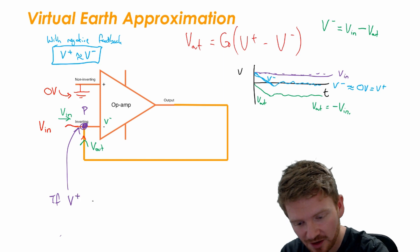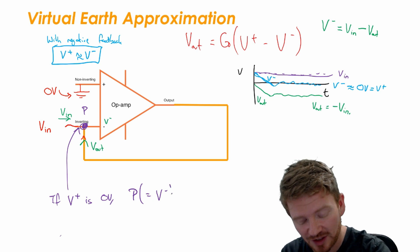And I'm going to say that if V_inverting is zero volts, this point here, point P, which is identical to the non-inverting input, that is about zero volts.